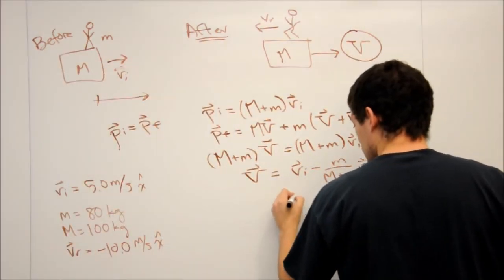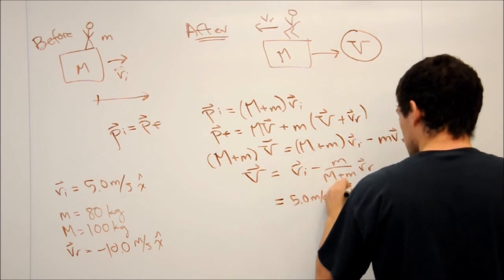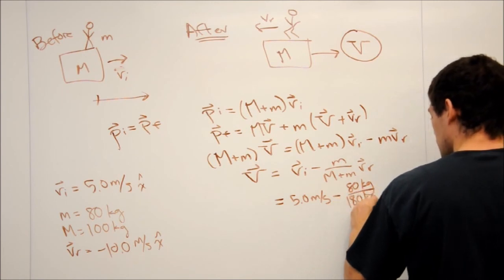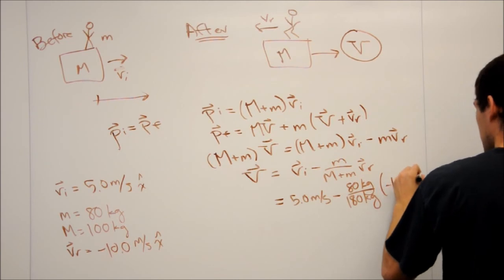Now, plugging all of these values in, we're going to get 5 meters per second minus 80 kilograms over 180 kilograms times negative 10 meters per second.